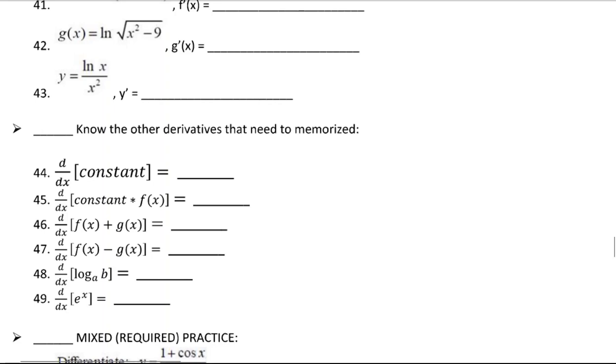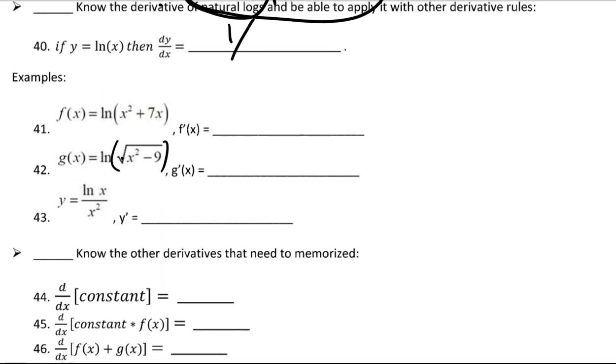So 42 looks like I want to take the derivative of natural log of something. So we need to know to take the natural log of x, you just do 1 over x. So if you're going to do the natural log of something else, it's going to be 1 over that something else.